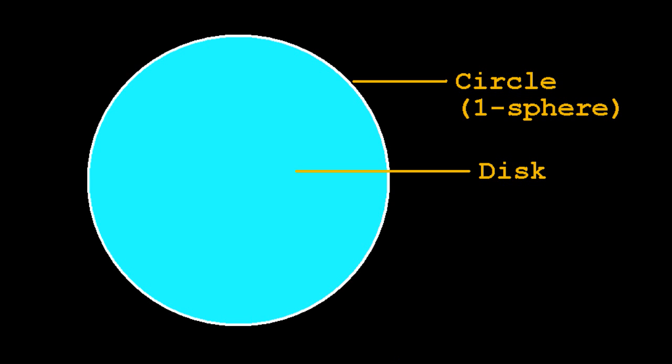The term circle technically refers to the circumference of what is technically known as a disk, and is sometimes called a one-sphere, as it is really a one-dimensional object which curves around in two dimensions.